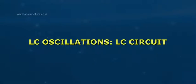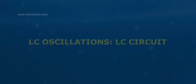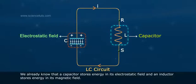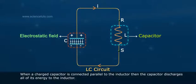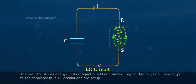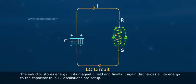LC oscillations — LC circuit. We already know that a capacitor stores energy in its electrostatic field and an inductor stores energy in its magnetic field. When a charged capacitor is connected parallel to the inductor, the capacitor discharges all of its energy to the inductor. The inductor stores energy in its magnetic field and finally discharges all its energy back to the capacitor. Thus, LC oscillations are set up.